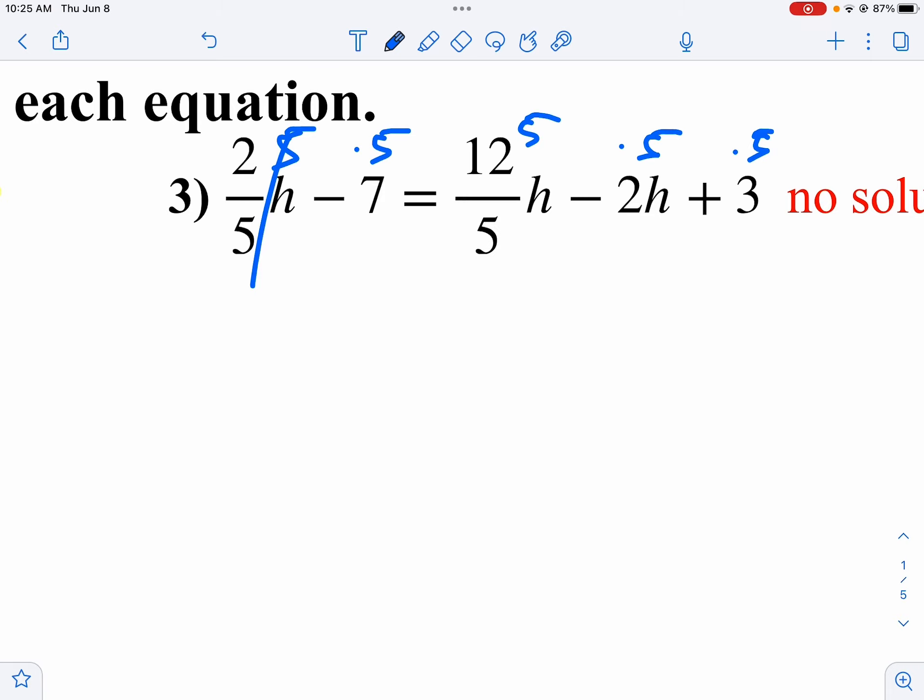So on the first one, the 5 is reduced, and we get 2h. Minus 7 times 5 is 35. Equals my 5 is reduced here, so I get 12h. 2 times 5 is 10, so minus 10h.